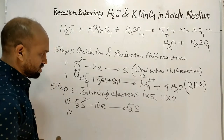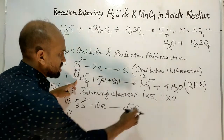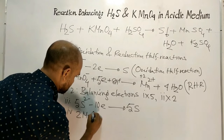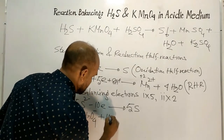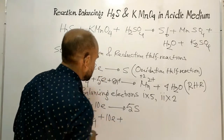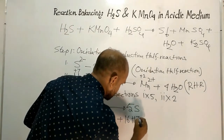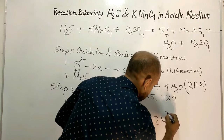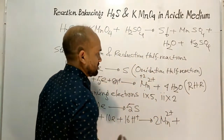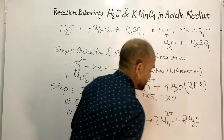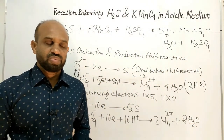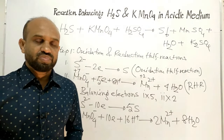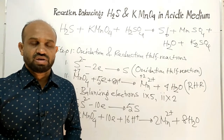Equation four — equation two multiplied by two gives: two permanganate ions plus ten electrons plus sixteen protons on the left, yielding two manganese ions plus eight water molecules on the right. Now let's add equation three and equation four together in step three.